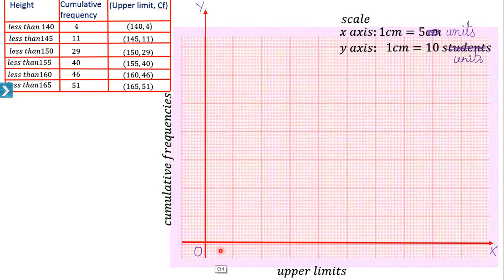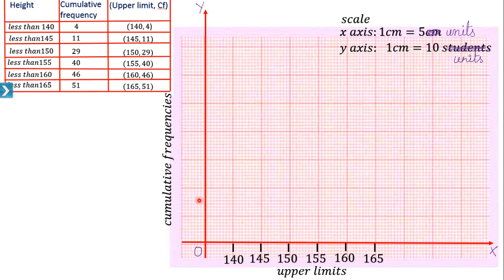Now along the x-axis, the least upper limit is 140, so start from 140: write 140, 145, 150, 155, 160, 165. Along the y-axis, we have chosen a scale of 10 units, so write: 10, 20, 30, 40, 50, 60.